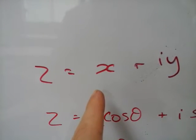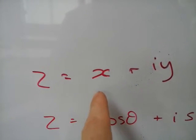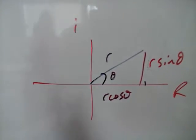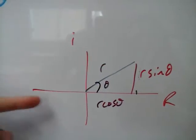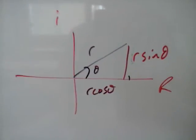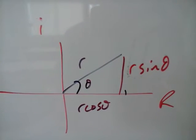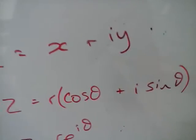Right, there's a complex number z. The real part is x, the imaginary part is y. Now I can redraw that on an Argand diagram. There's my imaginary axis, there's my real axis. I can work out the real part r cos theta and the imaginary part r sine theta.